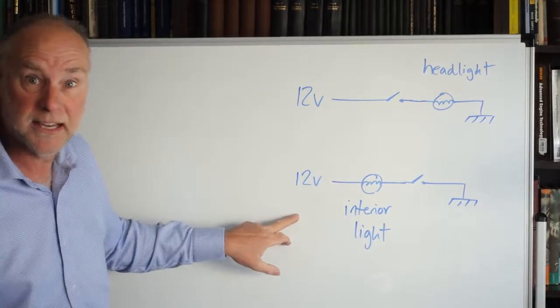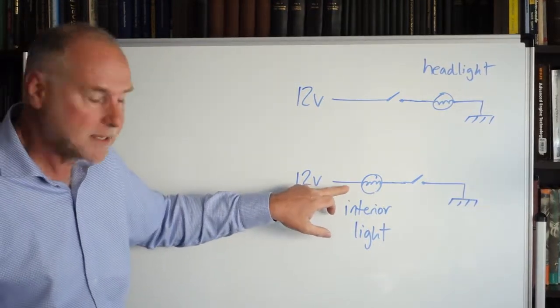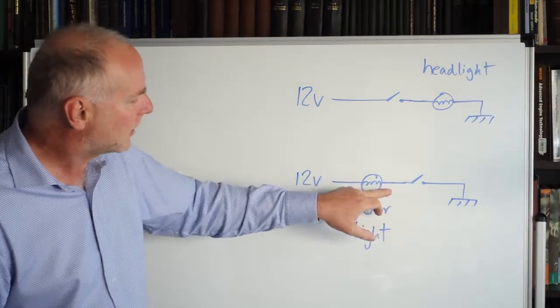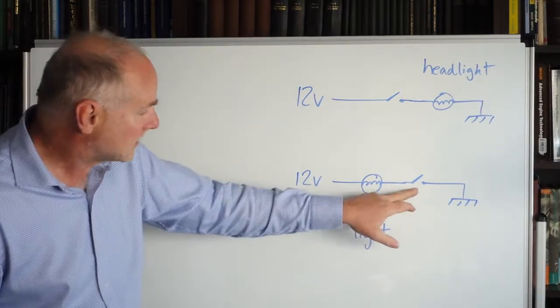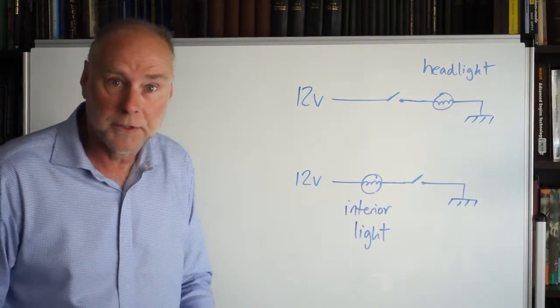Now let's look at the interior light circuit, 12 volt feed goes to the interior light and then the other side of the light is switched to ground when you open a door. So that's the door switch, it closes when you open a door.